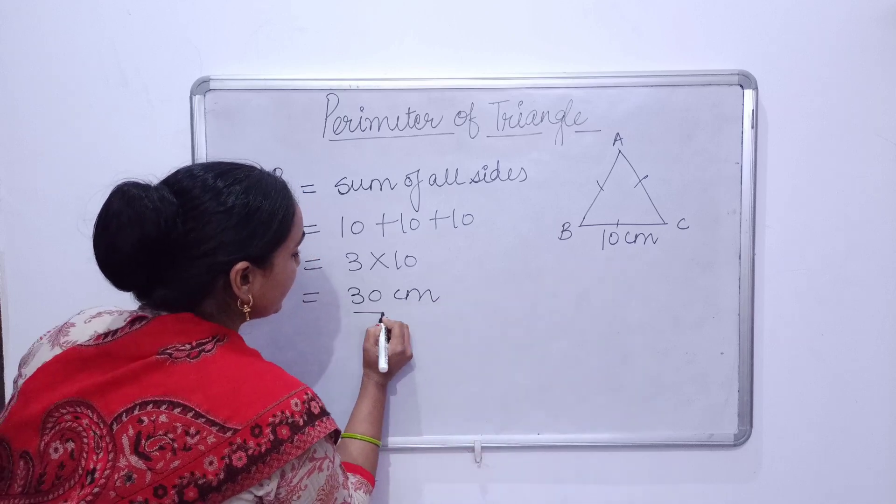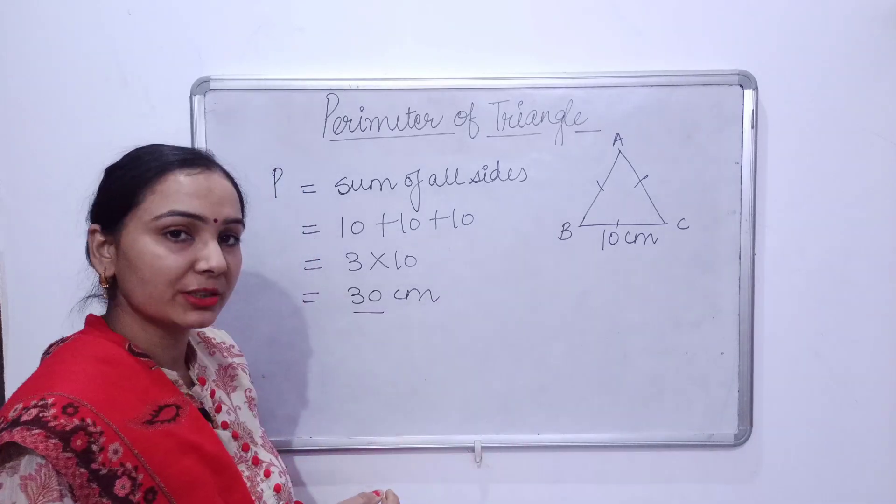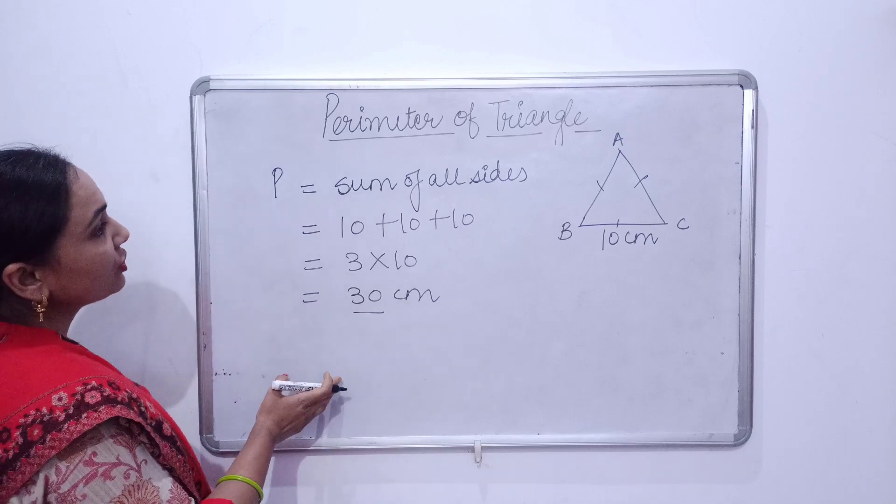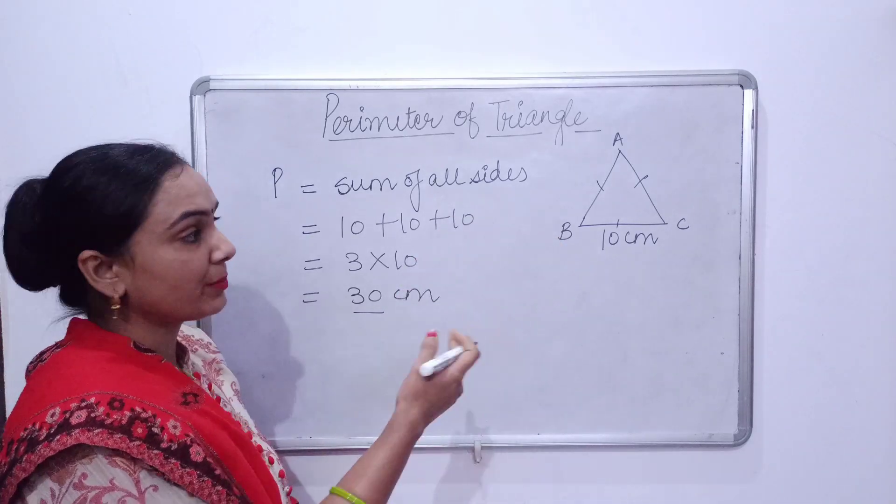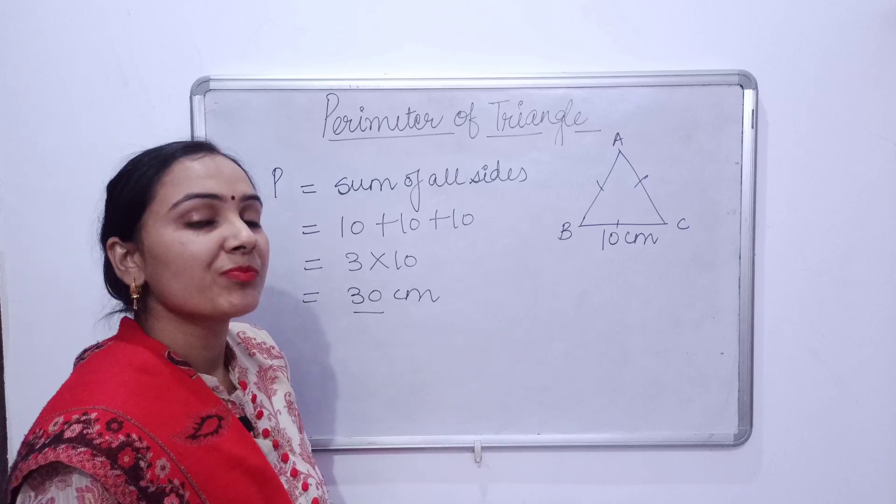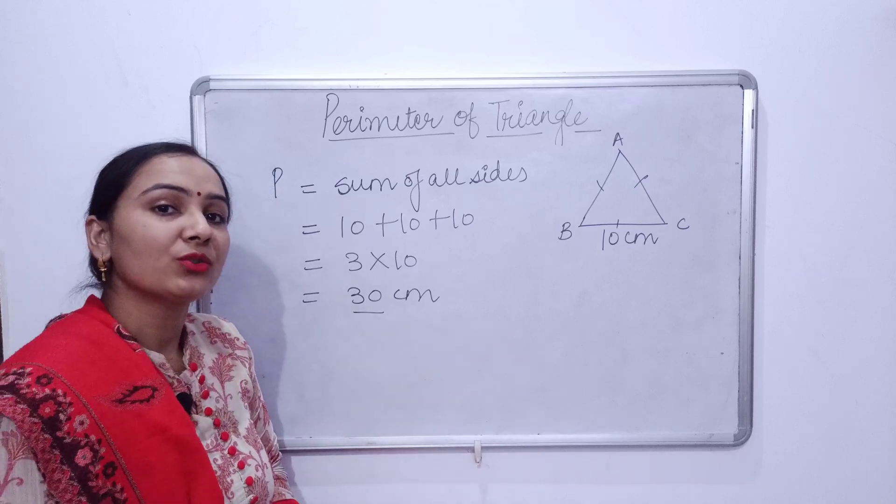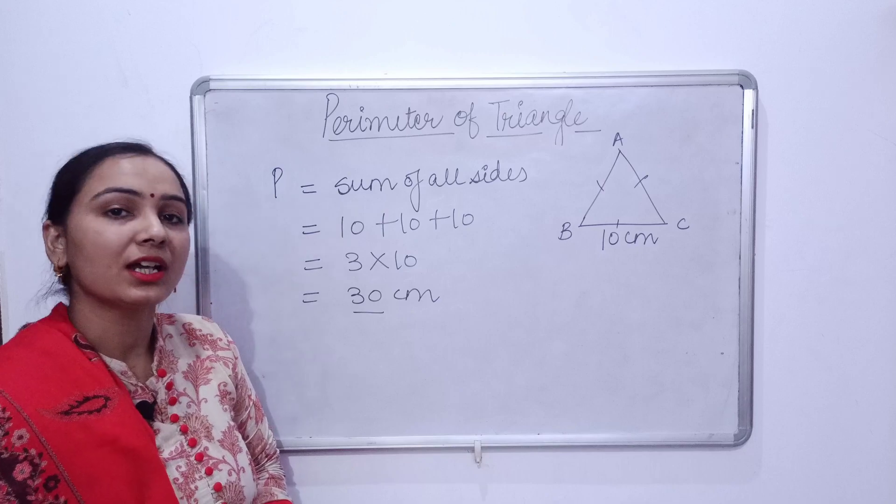Or we can write 3 into 10, that is also the same. Now 3 into 10 is 30, and the unit is centimeter, so we'll write centimeters. So this was all about the perimeter of equilateral triangle.